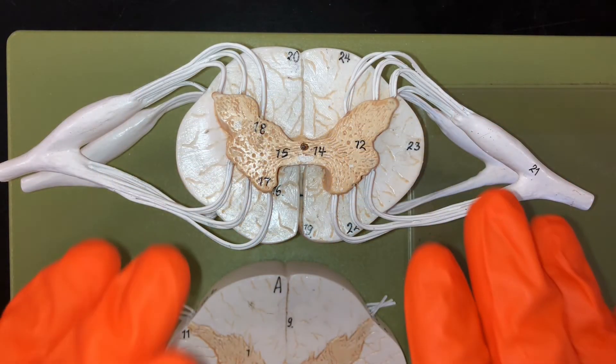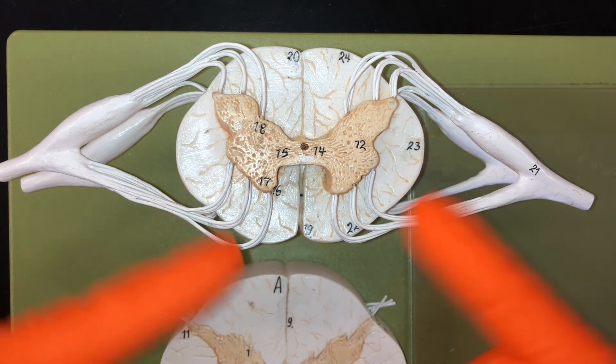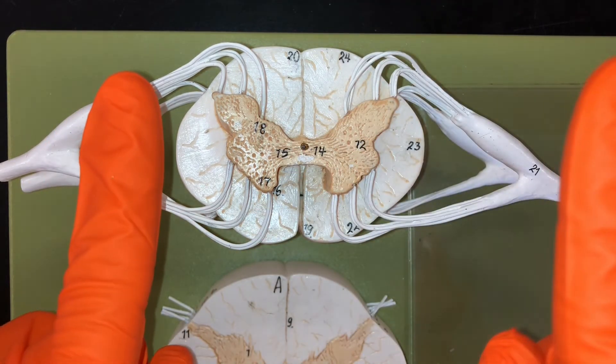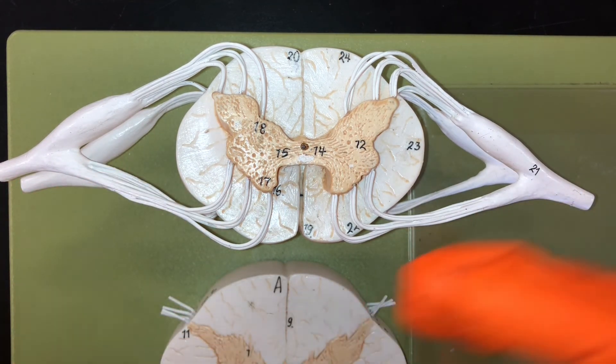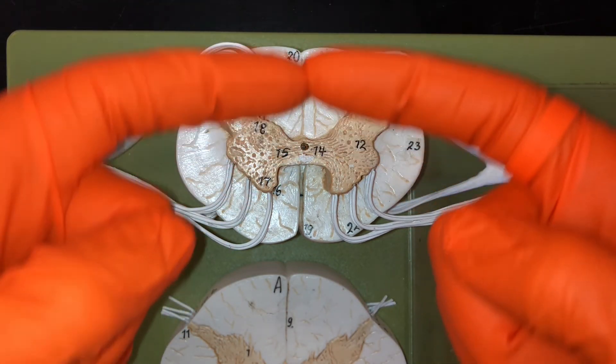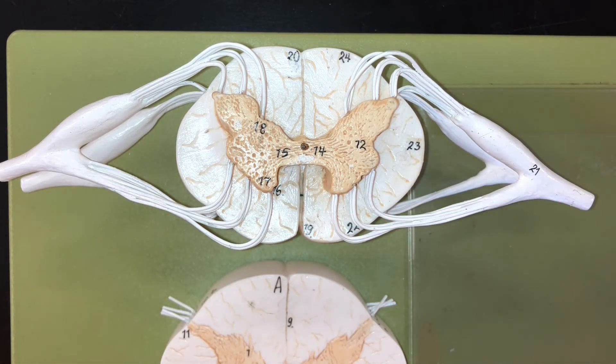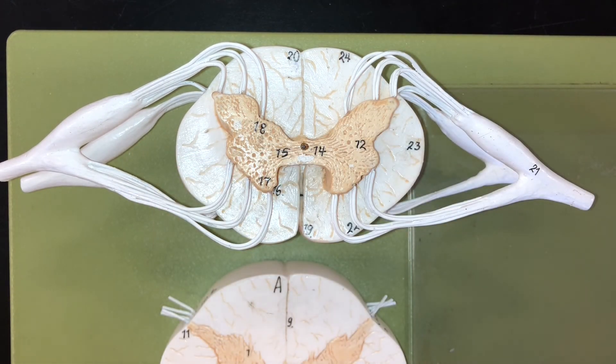My biggest tips for studying the spinal cord is to familiarize yourself with those directional terms so anterior posterior right left things like that. And then when you start adding in pieces of information like the posterior side is sensory anterior side is motor I think you'll have a lot better time putting all this information together. I hope those tips helped, let me know in the comments what you think and happy studying.